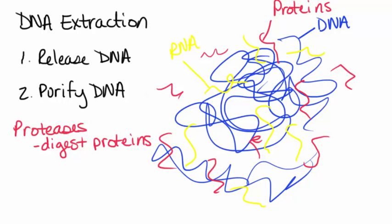And then if we want to digest the RNA, it would be a little hard to see if I wrote it in yellow here. But if we had RNA and we wanted to get rid of it, we're going to use what we call RNases. And RNases are going to digest specifically the RNA component. And again, the RNA is what I'm showing here in yellow in my picture. So that would be the purification step.